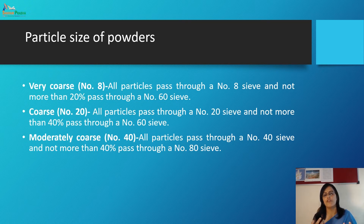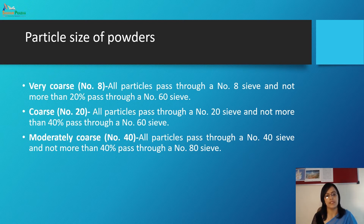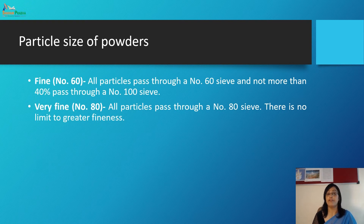Coarse powder: all particles pass through sieve number 20 and not more than 40% passes through sieve number 60. Moderate coarse: all particles pass through sieve number 40 and not more than 40% passes through sieve number 80. Fine particles: all particles pass through sieve number 60 and not more than 40% passes through sieve number 100.